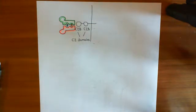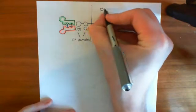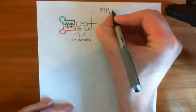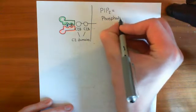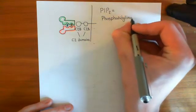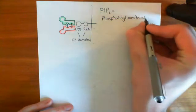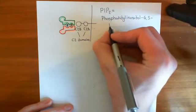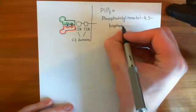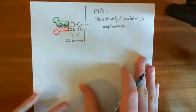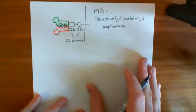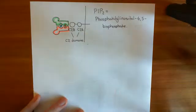Now we also find that there's another molecule important in this interaction — the molecule PIP2. PIP2 stands for phosphatidylinositol 4,5-bisphosphate. Let me discuss the structure of this molecule, because it shows up absolutely everywhere in molecular biology, but generally people don't actually know what it is.